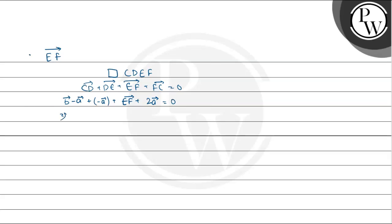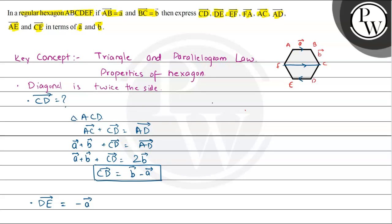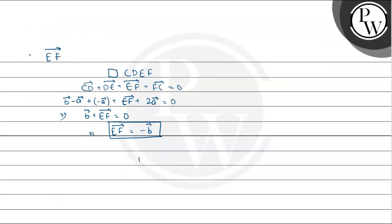Setting the sum to zero: (b - a) + (-a) + EF + 2a = 0, which gives b + EF = 0, so EF vector = minus b vector. This can also be evaluated from the fact that BC is parallel to FE — meaning BC is antiparallel to EF, i.e., they are parallel but in opposite directions. This clearly implies EF vector = minus b vector.